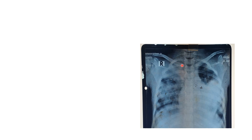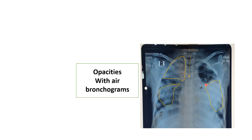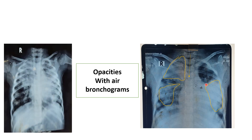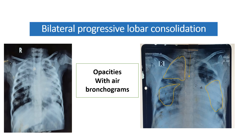In this x-ray, opacity is present in the right upper and middle zone, and also in the right lower zone with air bronchogram. Even in the left lung field, left lower zone, opacity is present. Multiple opacities with air bronchogram are present in both lung fields. Similarly, in this next x-ray, the trachea is in the central position with opacity in the right upper and middle part and throughout the left lung field. The diagnosis for these two x-rays is bilateral progressive lobar consolidation.